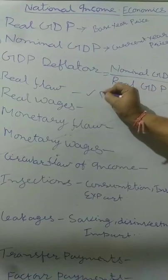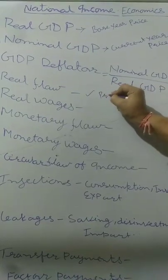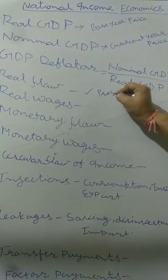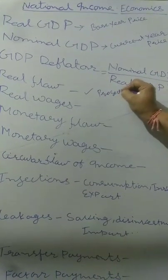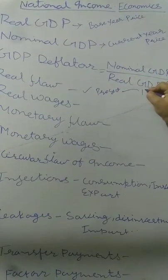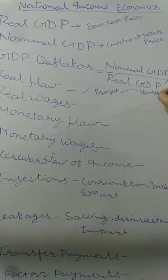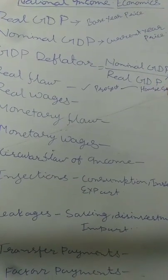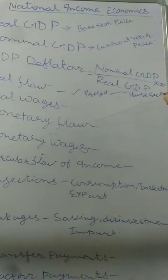So goods and services flow from the production sector to the household sector — this is Real Flow.